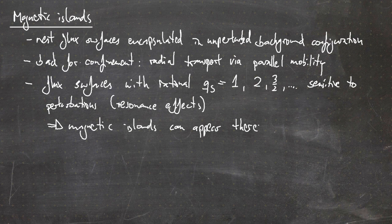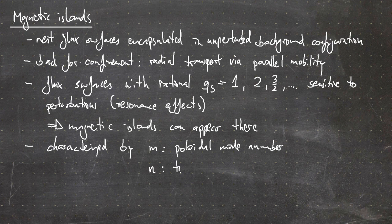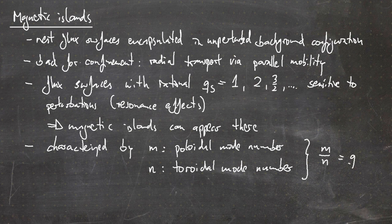Magnetic islands are characterized by the mode number: M, which is the poloidal mode number, and N, the toroidal mode number — basically the periodicity in each of these directions. Since the islands are more likely to appear at flux surfaces with a rational safety factor, M over N equals Q_s at these flux surfaces. This is an important thing to keep in mind.